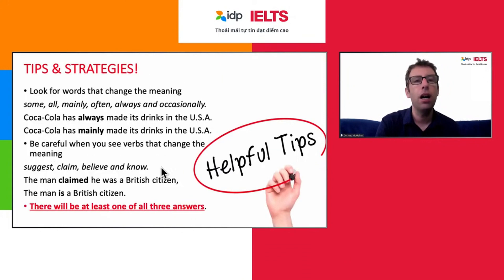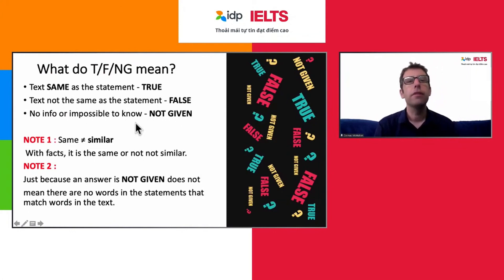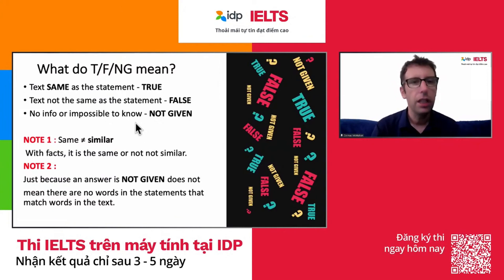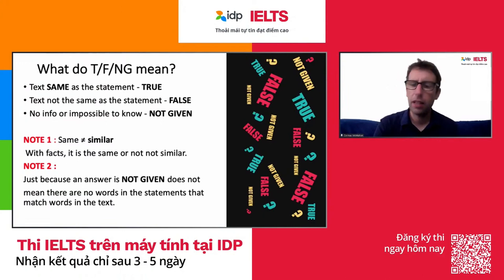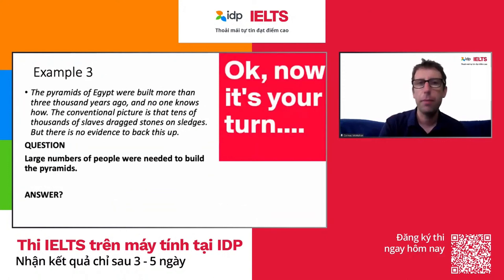Just remember these definitions: if the information in the text matches the question, it's true. If the information in the text does not match the question, it's false. If we cannot know — because we don't have enough information — then it's not given.